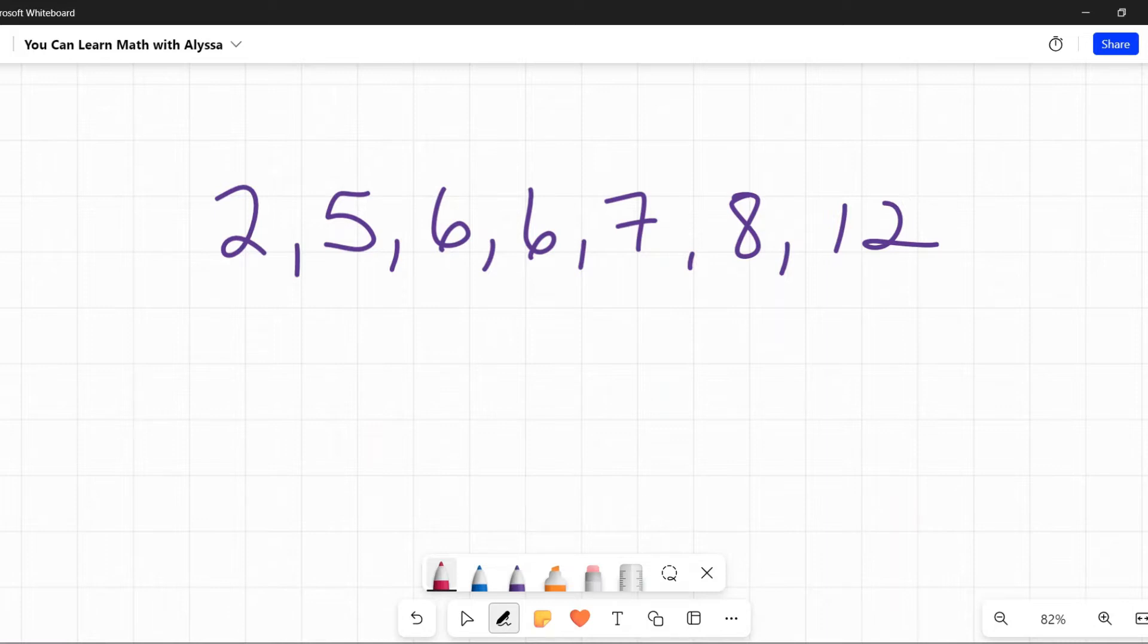First one up is the mean. You probably know this by another name, average. It's probably how it was introduced to you earlier as being the average of the numbers. Nothing has changed, even though it has a different name now. You're going to add all the numbers in the data set together, and then you're going to count how many numbers there are and divide that previous sum by the number of numbers that are in the data set.